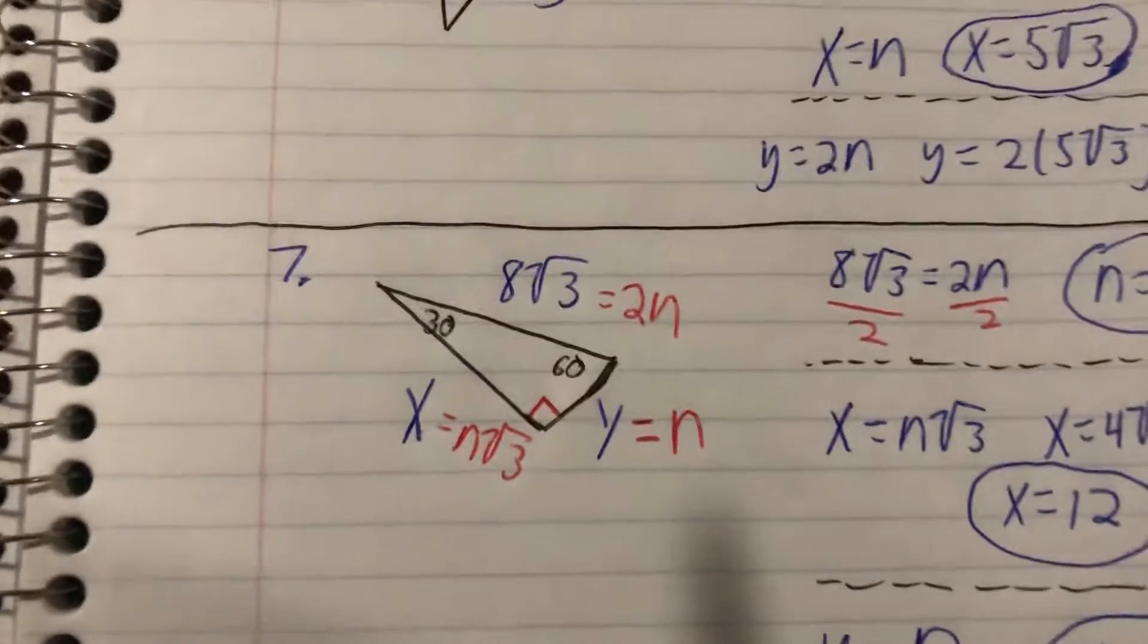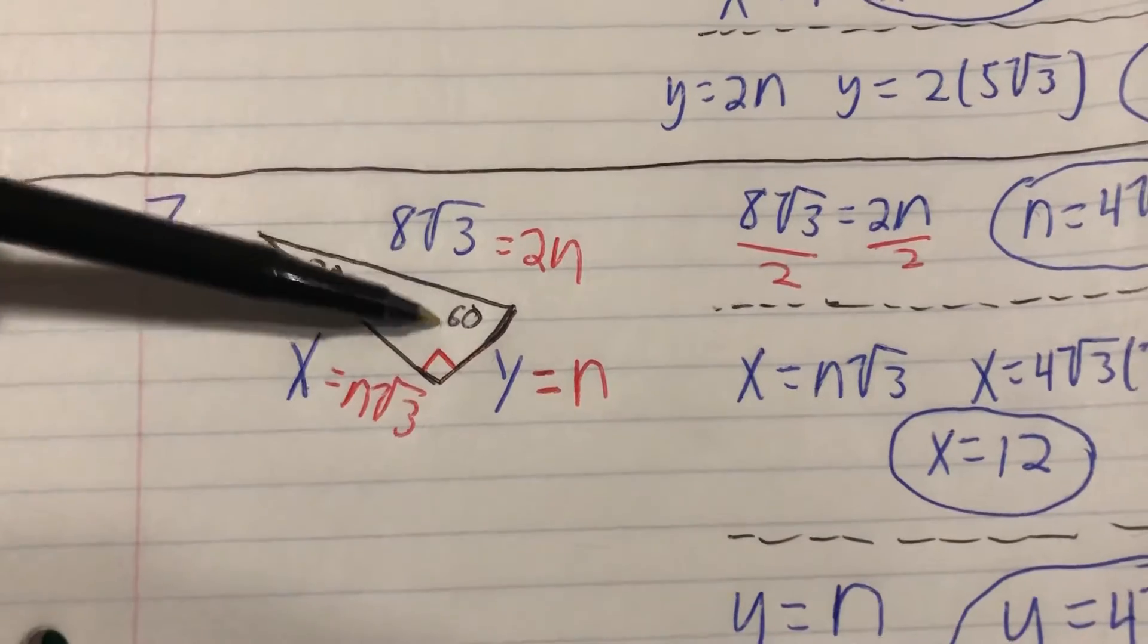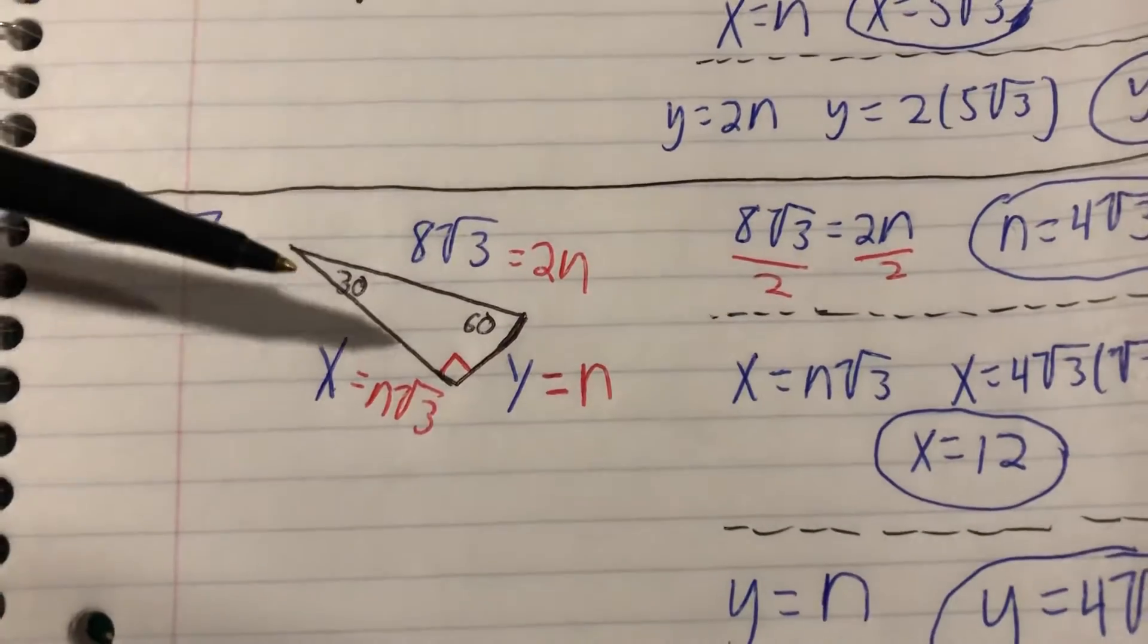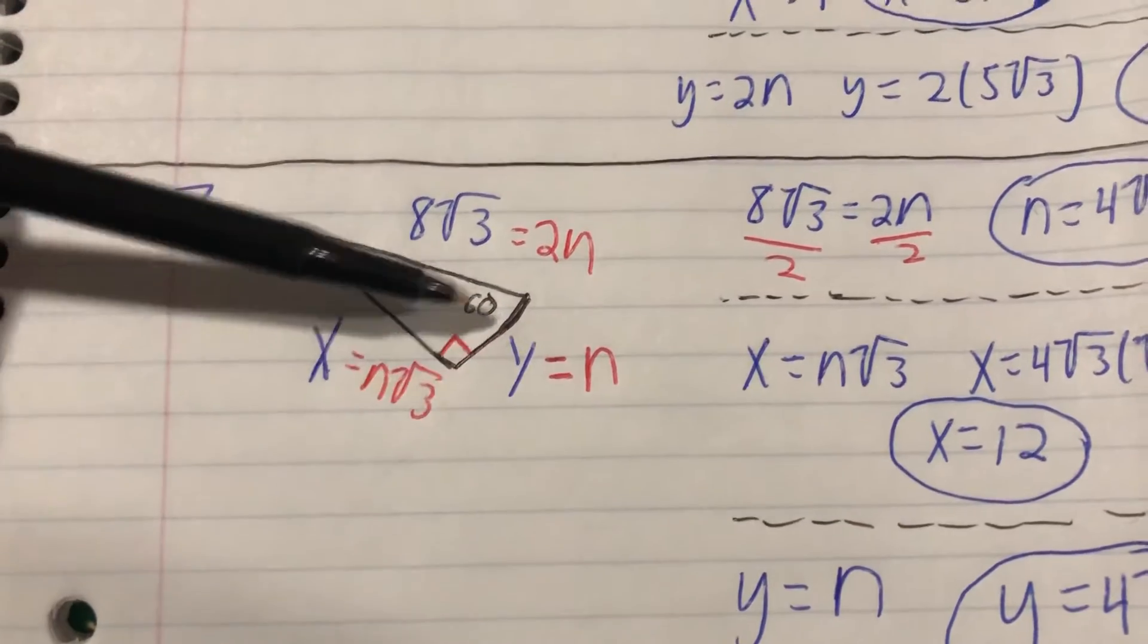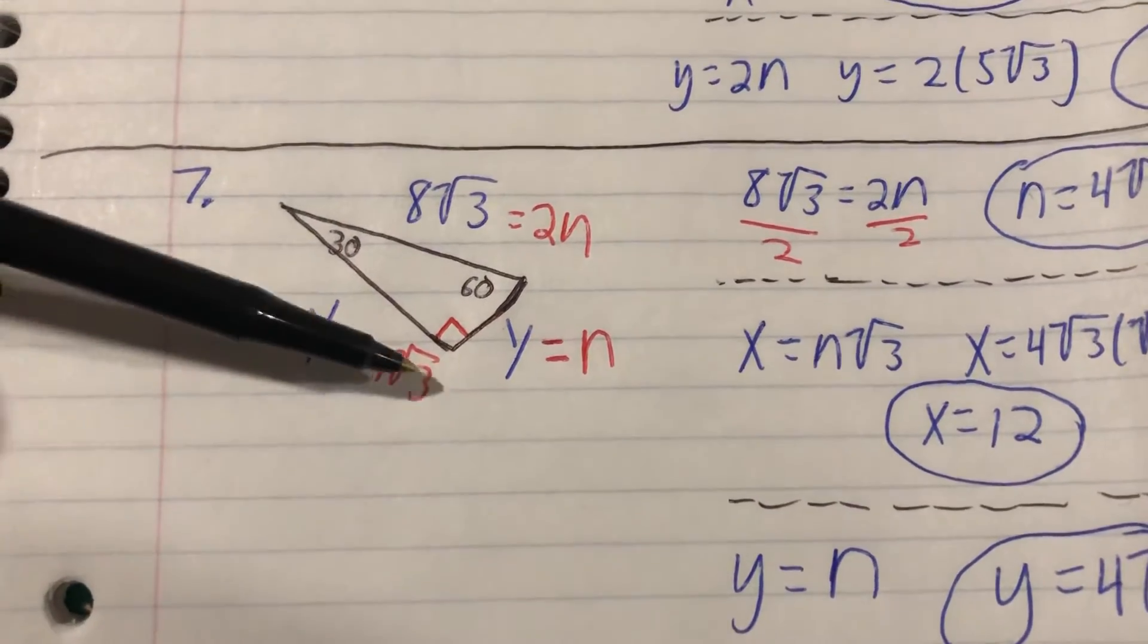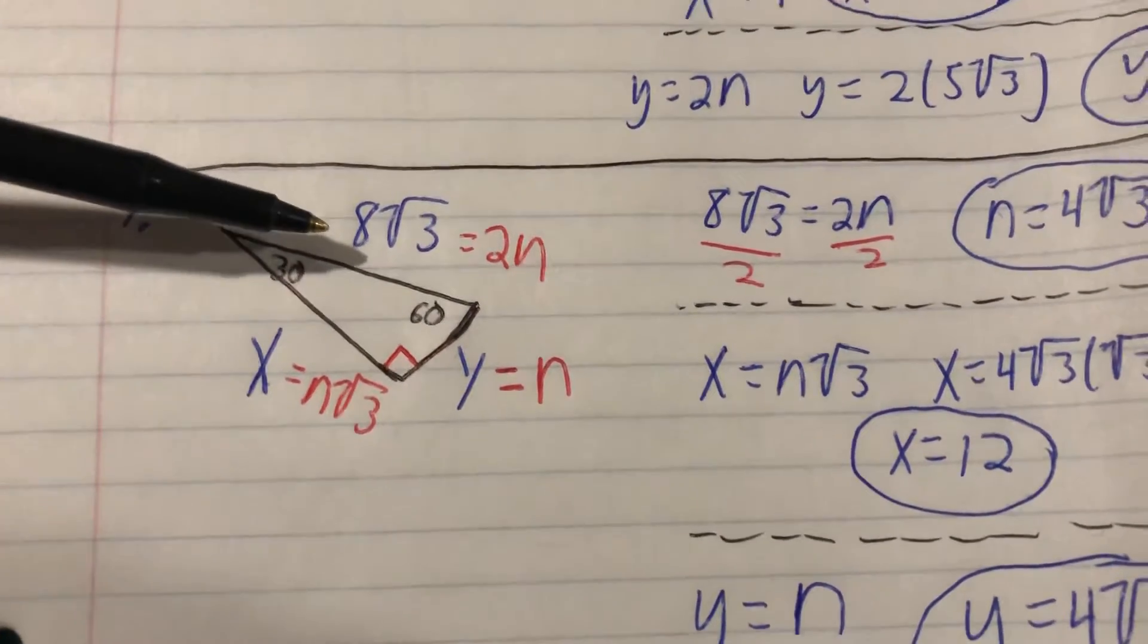Looking at number 7, the last example here. This time they gave us the side opposite from 90, they gave us the hypotenuse, so a little different look on each one of these. Opposite from 30, we're going to label that n; opposite from 60, we're going to set that equal to n√3; opposite from 90, we're setting equal to 2n. So we're going to use this equation 8√3 equals 2n to solve for n.